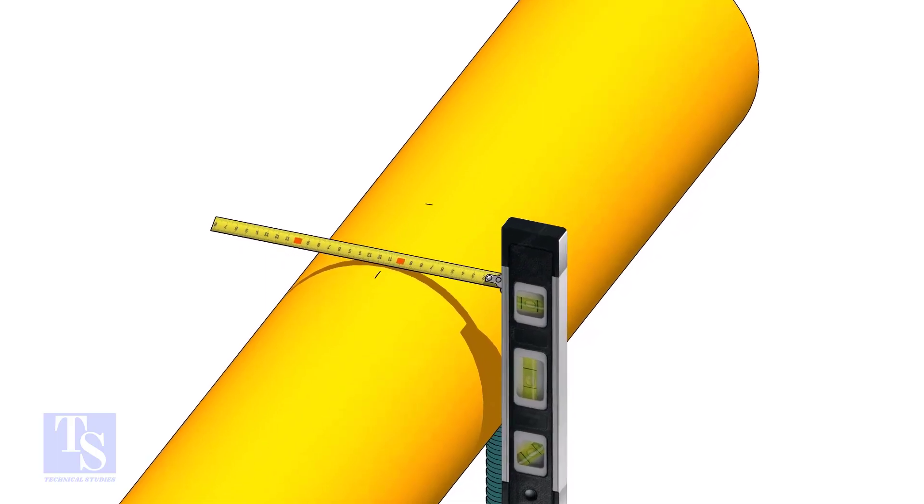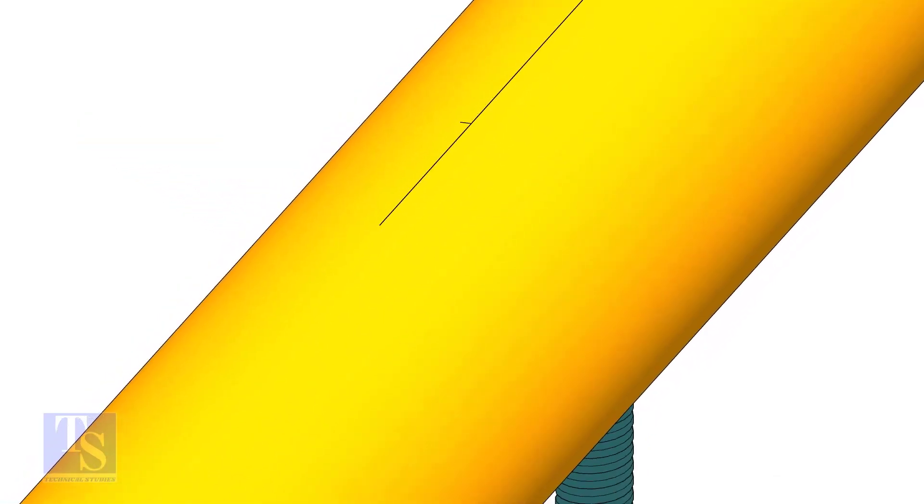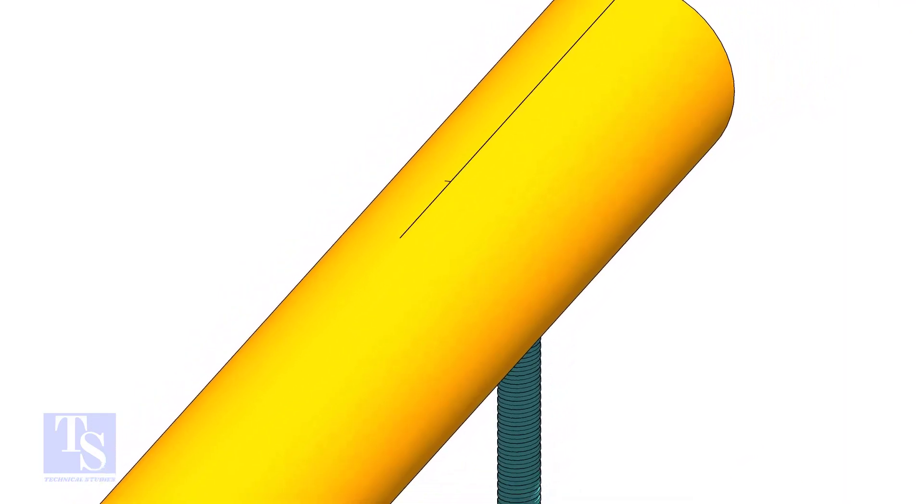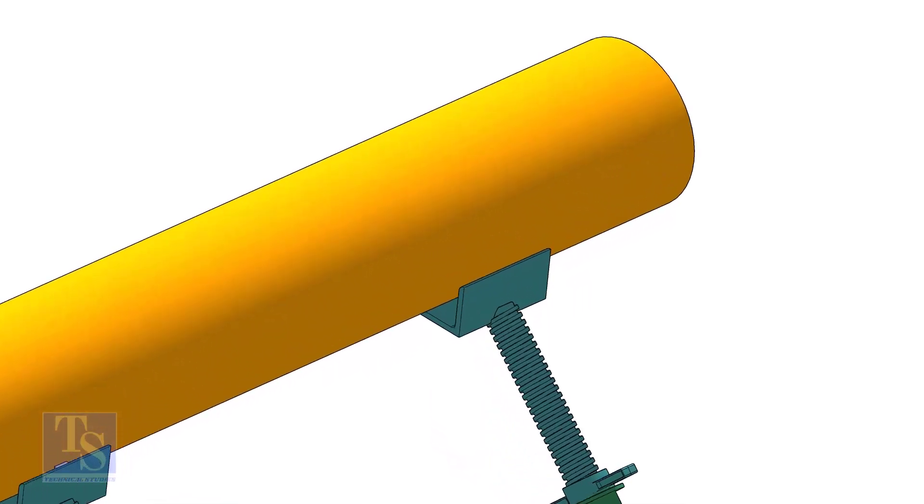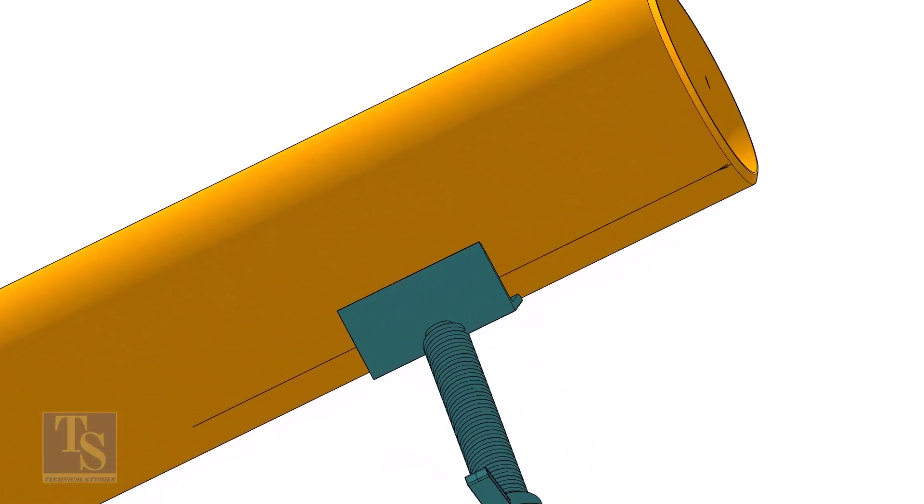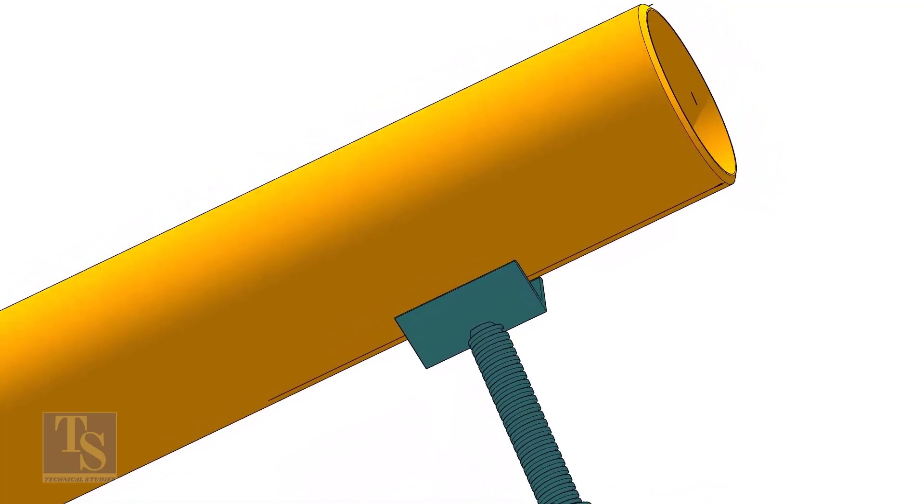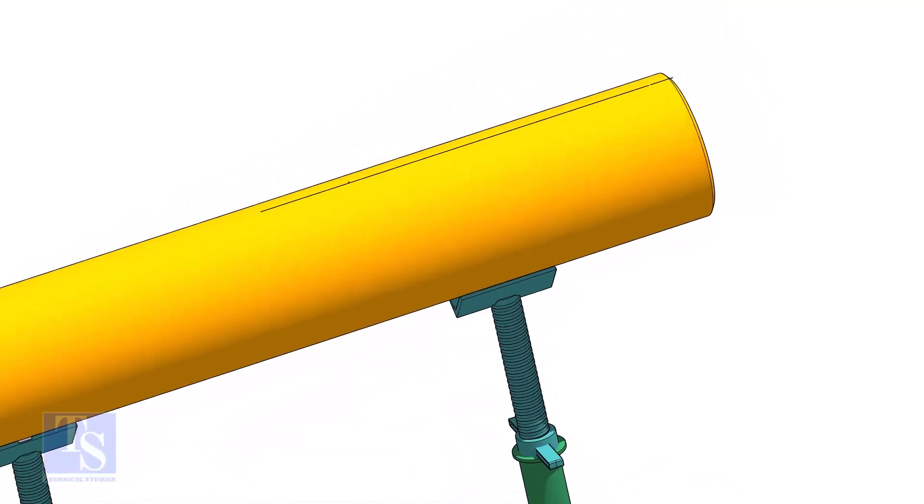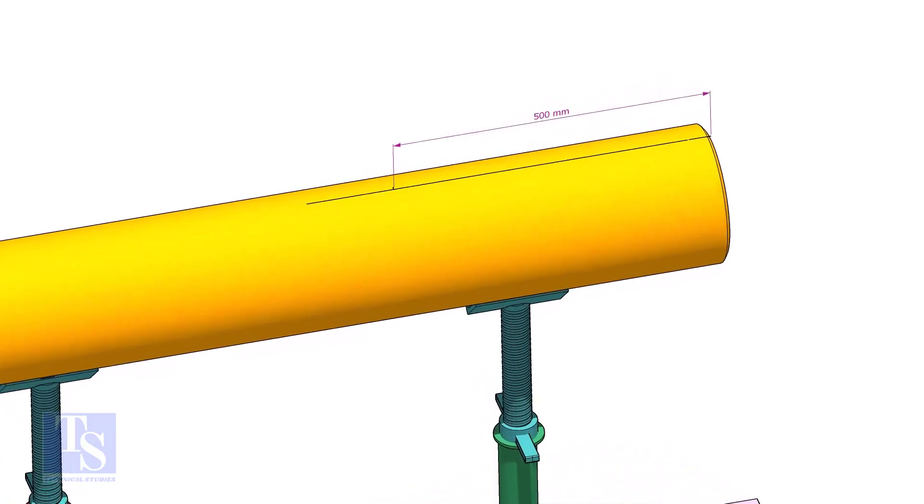Mark the center of the other end where you want the center line to be extended. Mark the center of the branch connection.